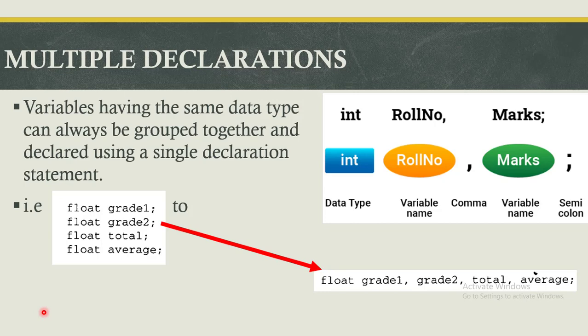Next is multiple declarations. When you have more than one variable name that shares the same data type, instead of repeating the data type multiple times—as you can see in this given case, we have float grade1, float grade2, float grade3, float grade4—you can substitute that with one data type.